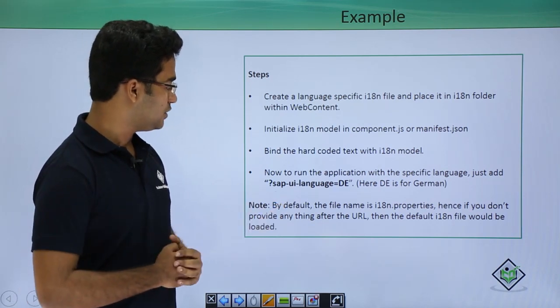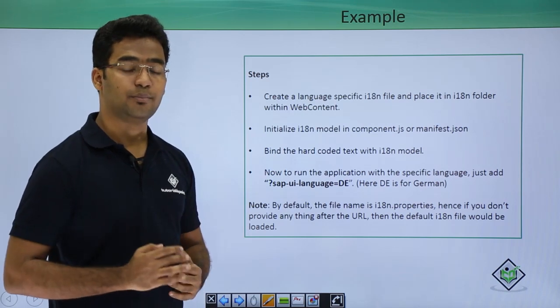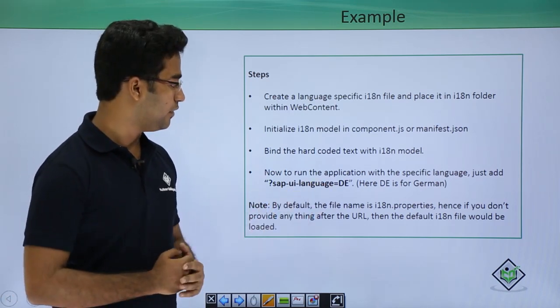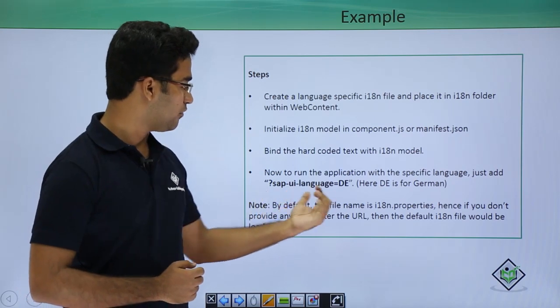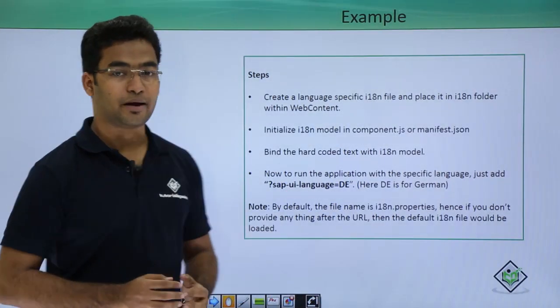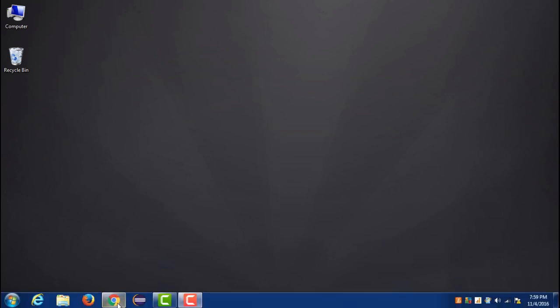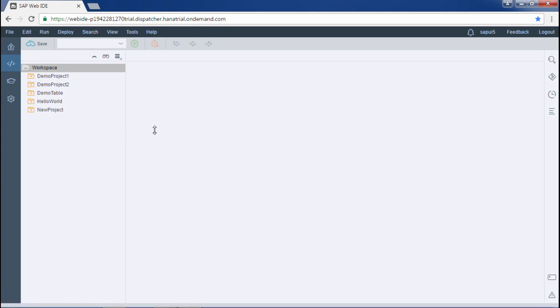If you want to load the application using a particular language — for example German (de) — you mention this after the URL of the application. Now let us look at the practical demonstration of all these steps. Here we will see internationalization and localization in a SAPUI5 application, and for this I will be using SAP Web IDE.